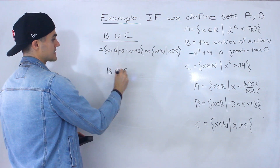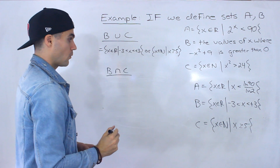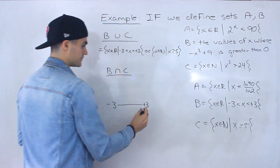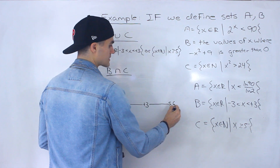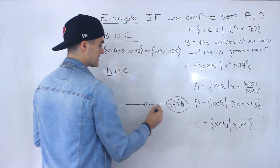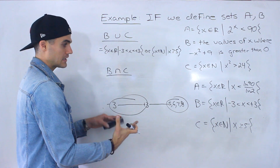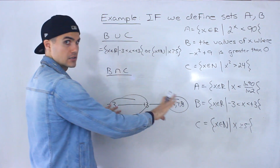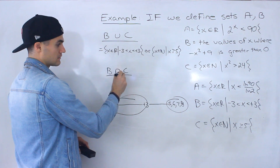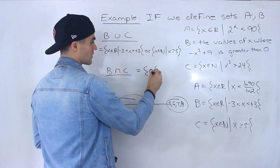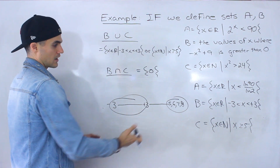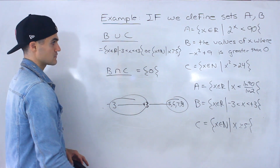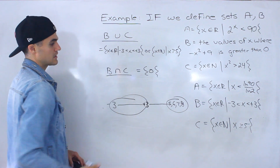Now what about B and C — the intersection? Set B goes from negative 3 to positive 3, and set C is the natural numbers 5, 6, 7, 8, etc. Notice there's no intersection between these two — they are mutually exclusive. Set B ends at positive 3 and set C begins at positive 5. So B intersect C is just the empty set.